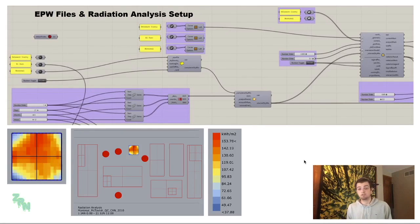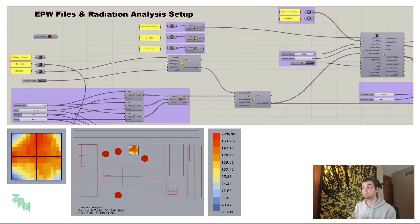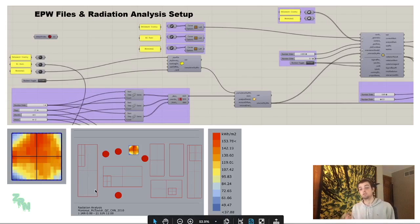You have to set up your sky matrix and geometry before you start plugging things into the radiation analysis component, which is right here. As you can see, I don't have the north arrow set up because it's automatically set in the Y direction, which is what my geometry is set up in, so there's no need to add another vector. The geometry here connects to my lofted surface which I'm using for my roof. Below that is context, which is the surrounding area of your geometry — originally NURB surfaces that I've referenced as BREPs.